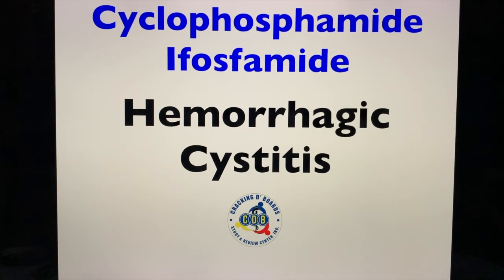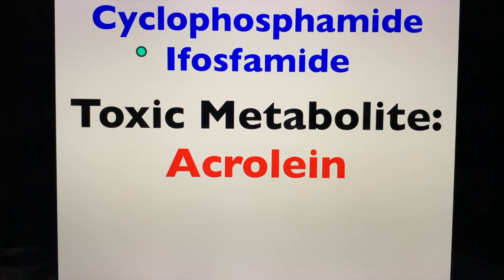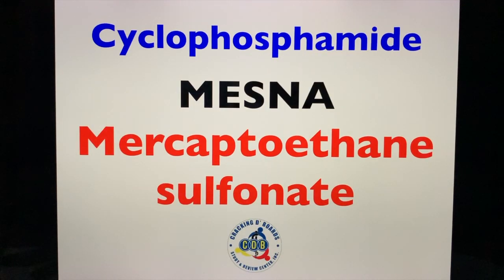Next are the antineoplastics cyclophosphamide and ifosfamide. Both are notorious for hemorrhagic cystitis. The toxic metabolite responsible for the hemorrhagic cystitis is acrolein. How do you treat cyclophosphamide or ifosfamide hemorrhagic cystitis? You give mesna. Mesna stands for mercaptoethanesulfonate.